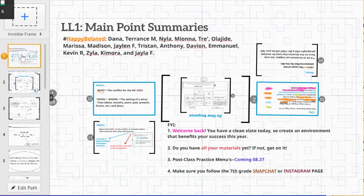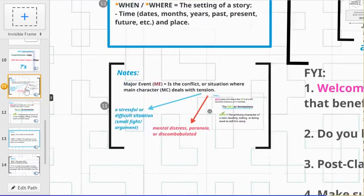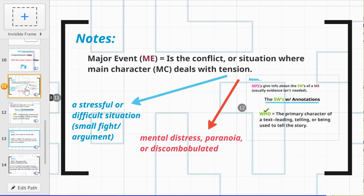L01, which means literally lesson one, is main point summaries. The whole point of this is understanding how do we write a typical main point summary. Main point summaries are your basic summaries. They don't really have too much, but they do give an account or recap or paraphrase version of the major event of what you've read or the major event of a text. When you think about major event, major event is like the conflict for that main character.